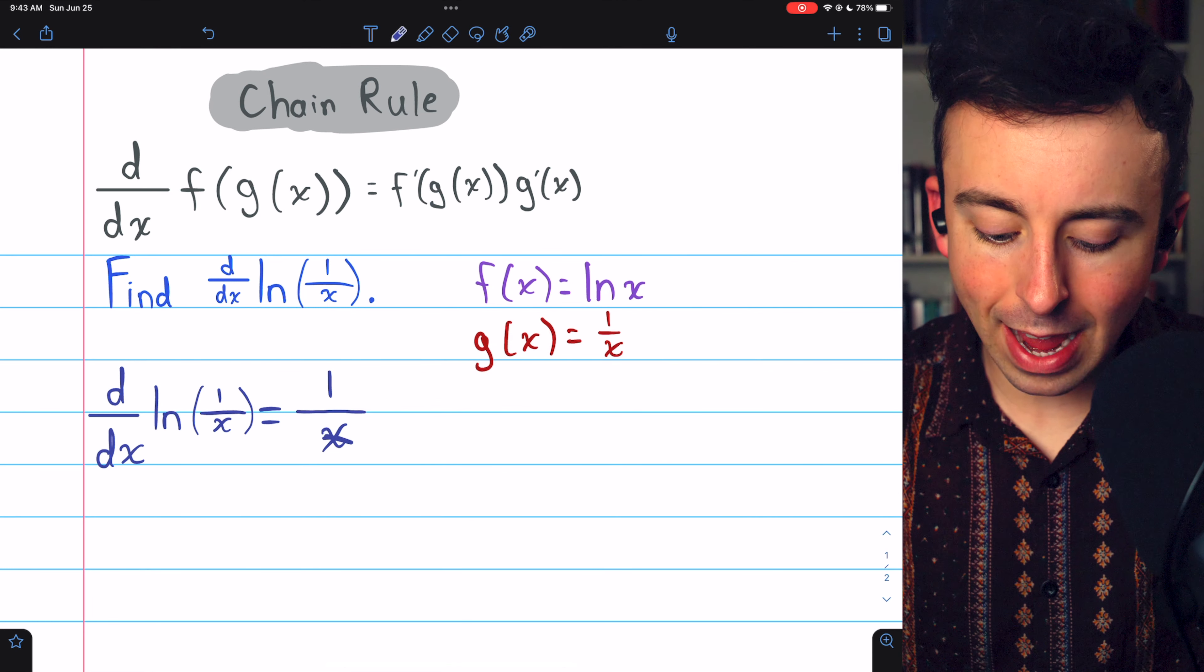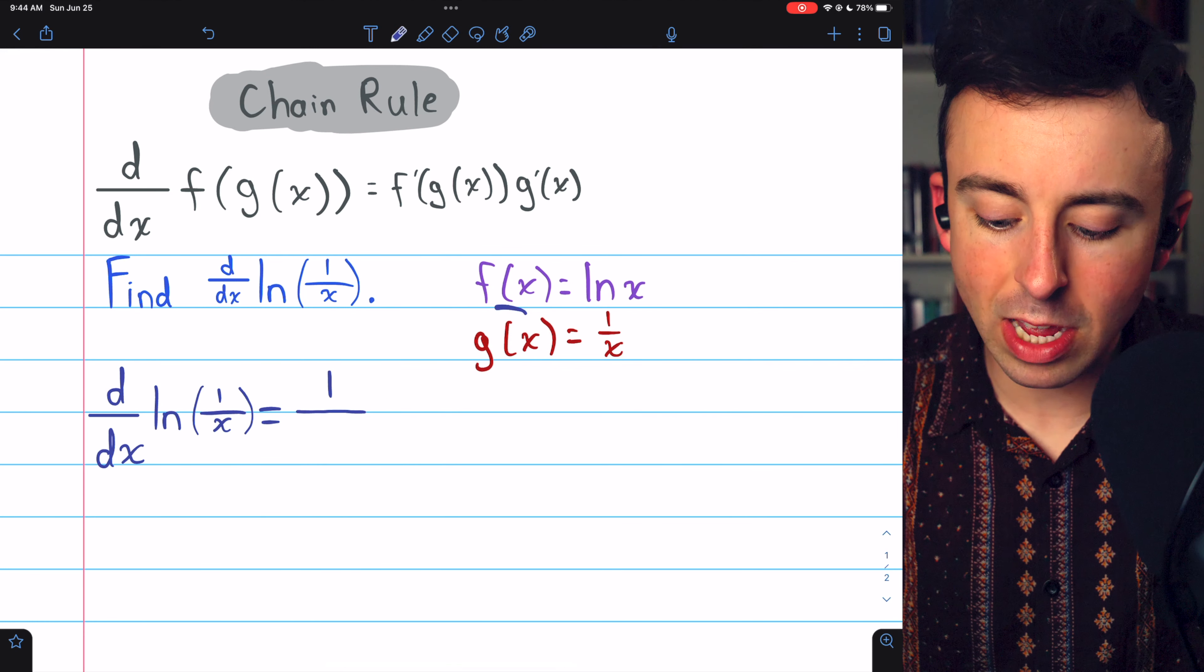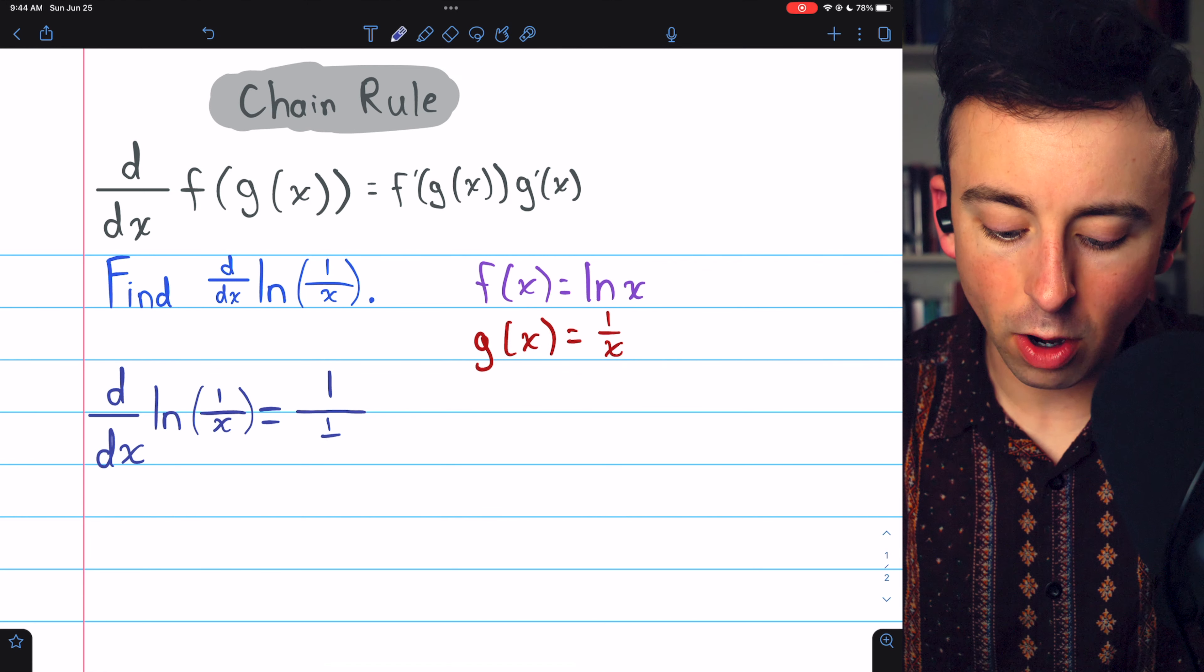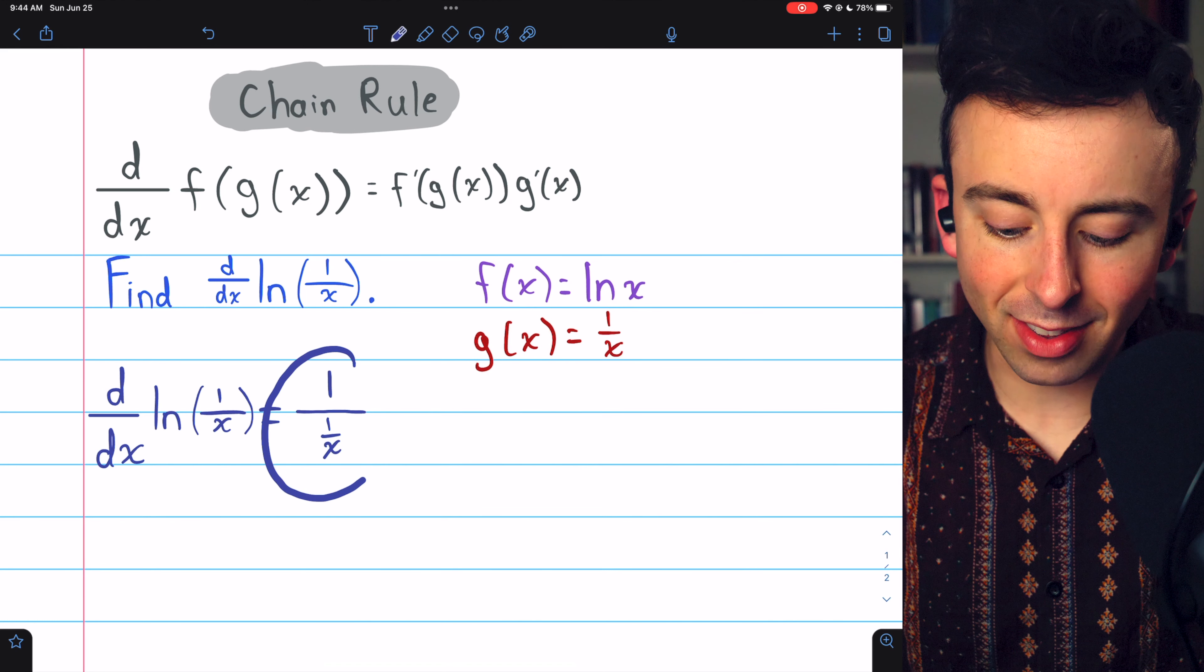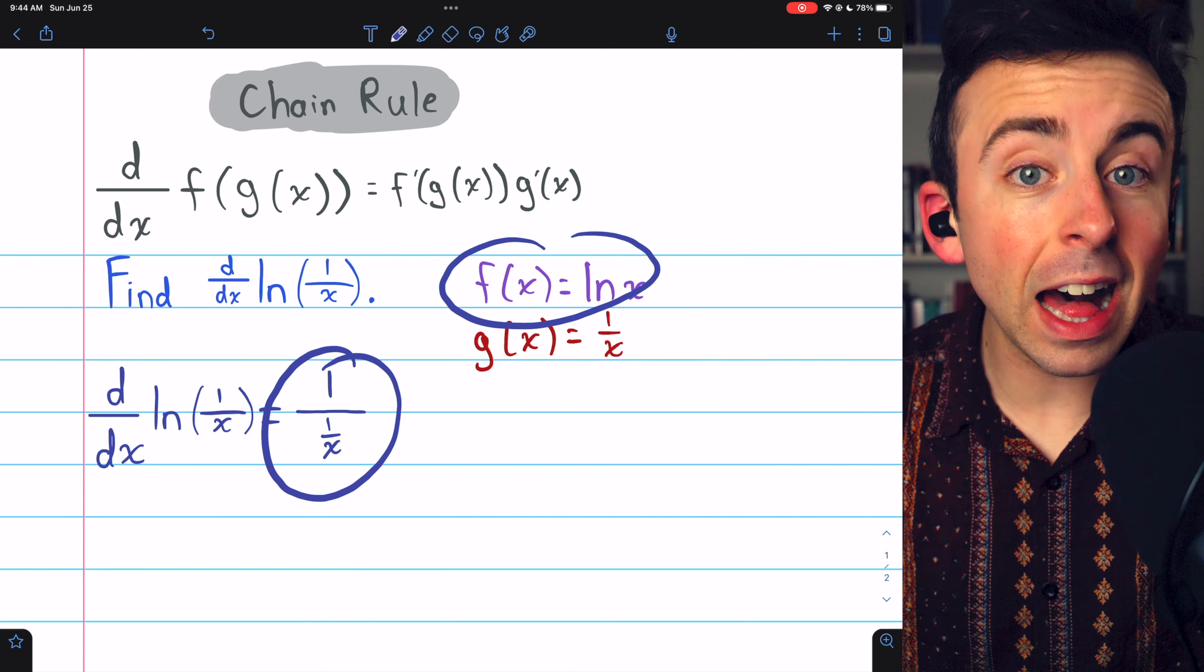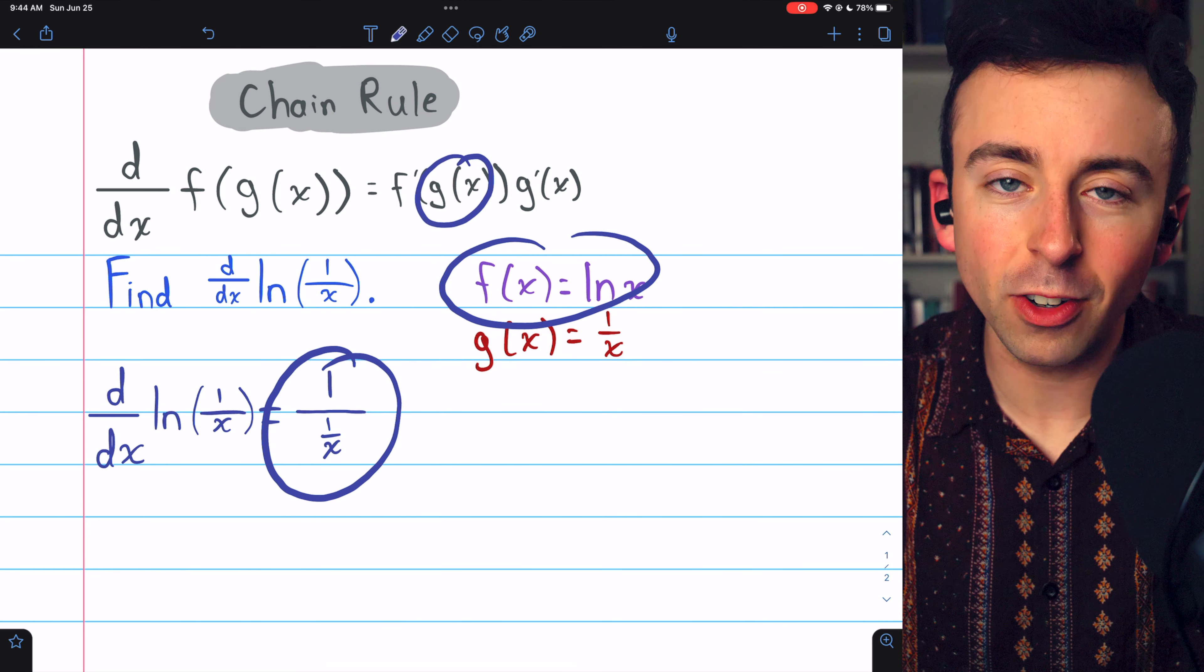So rather than x, we should have g of x, which is 1 over x. So this is the derivative of f evaluated at the inside function, g.